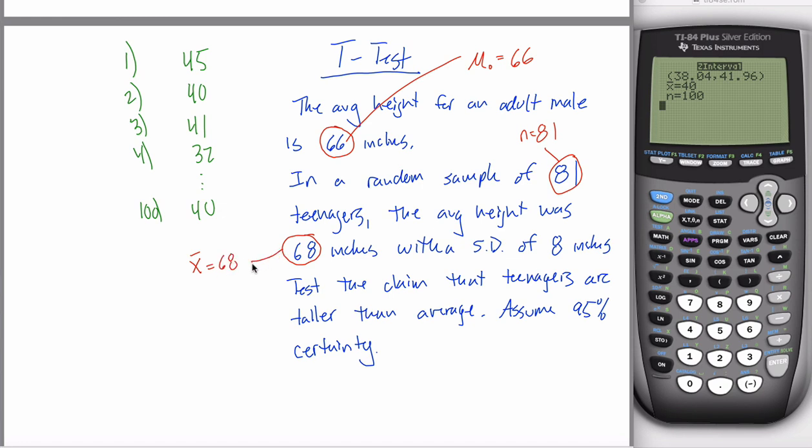So far, everything is the exact same, where things change is right here. This standard deviation is not referring to all adult males, it's instead only referring to these 81 teenagers. So this 8 is not a sigma. It couldn't be a sigma. It's not talking about the population, it's just talking about the sample. This is s, not sigma.